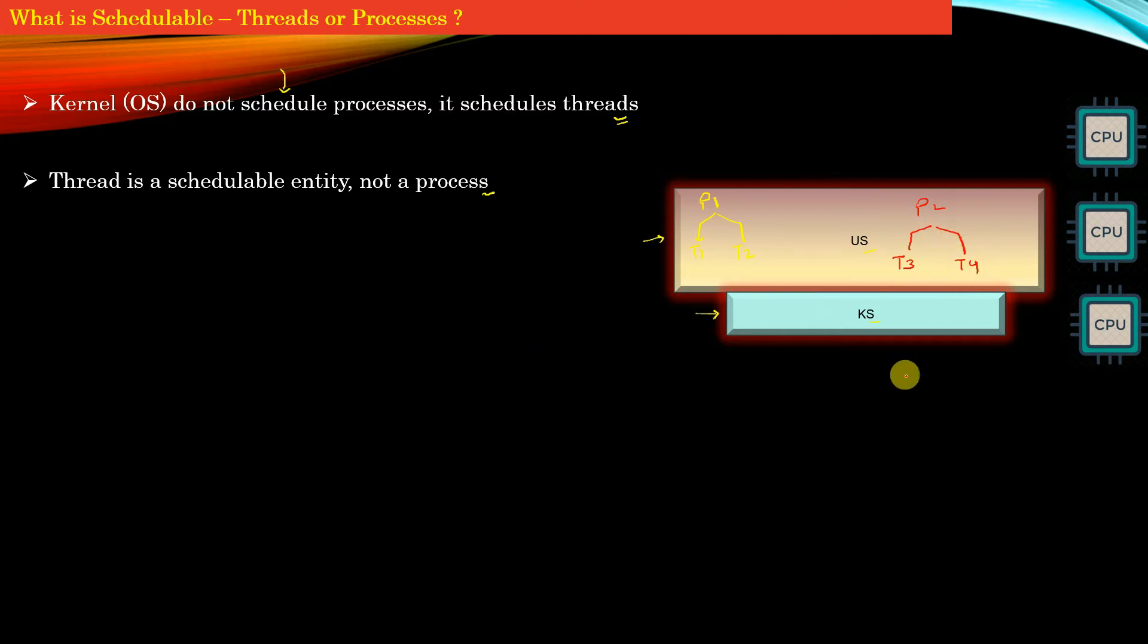Now your kernel or operating system will schedule threads T1, T2, T3, and T4. These four threads will compete for the three CPUs attached to the system as hardware resources. Remember, the operating system sees threads as schedulable entities, not processes. The competition for CPU is between the four threads: T1, T2, T3, and T4.